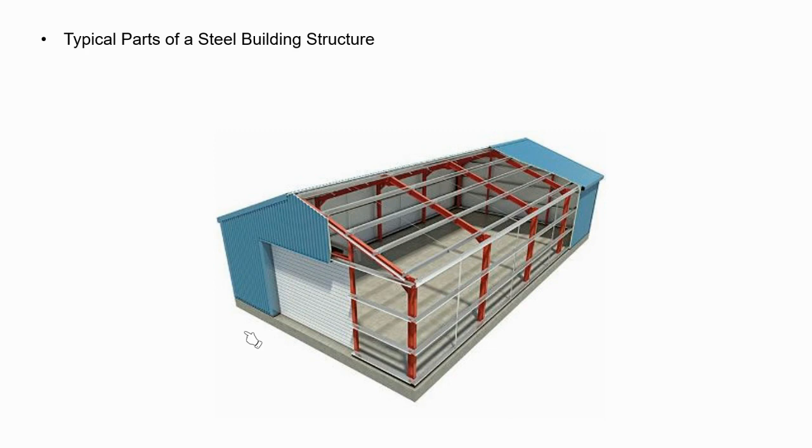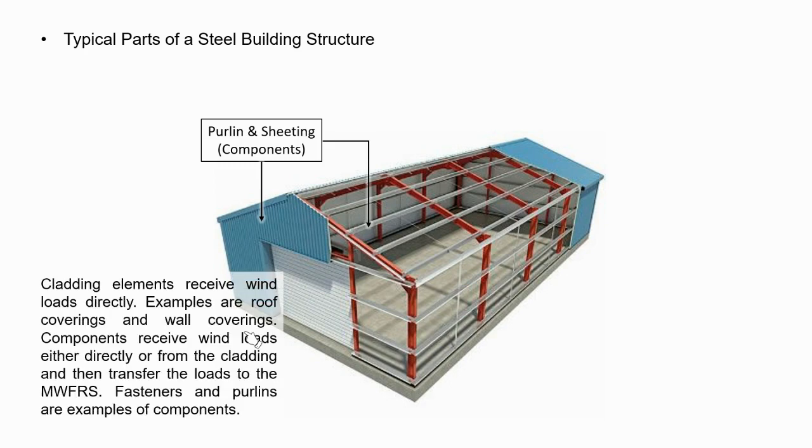A typical steel structure is composed of mainframes and cladding components. Purlins and sheetings can be classified as components and claddings. Other examples of components and claddings are roof coverings and wall coverings. Components receive wind loads either directly or from the cladding, and then transfer the loads to the main wind force resisting system, MWFRS. Fasteners and purlins are examples of components.